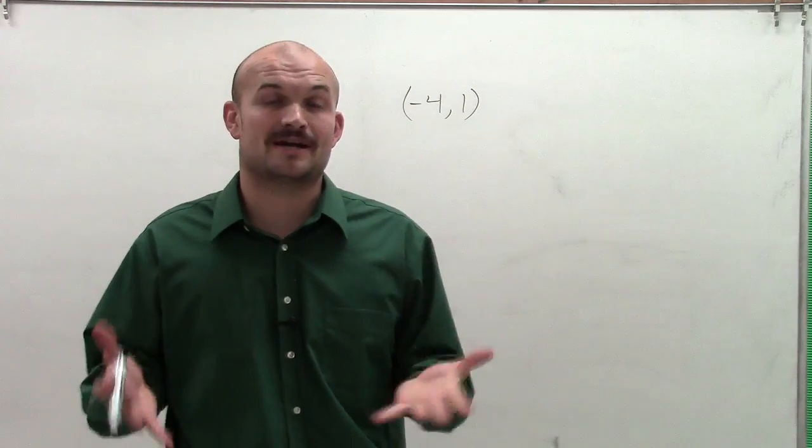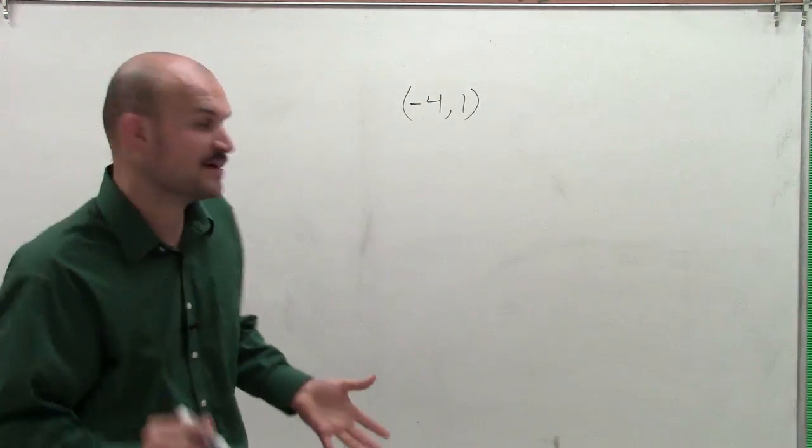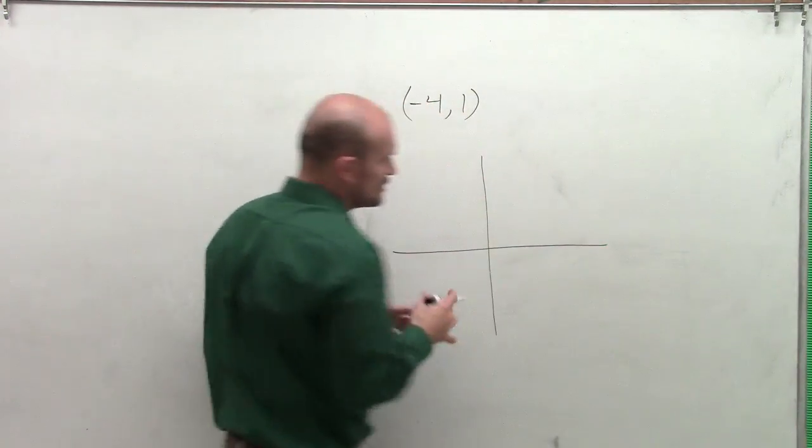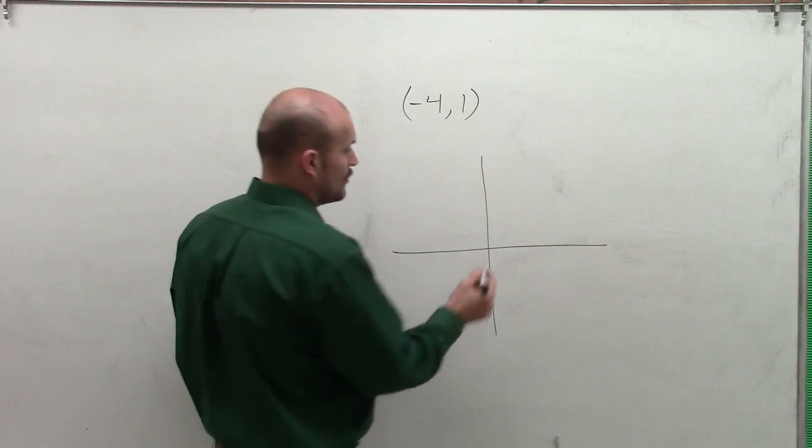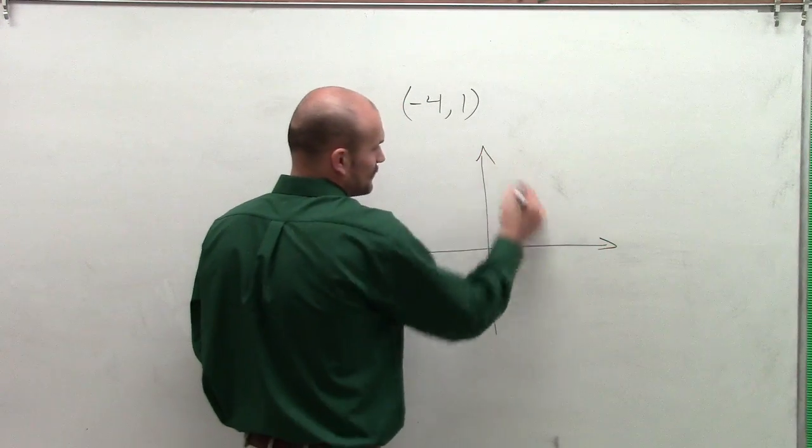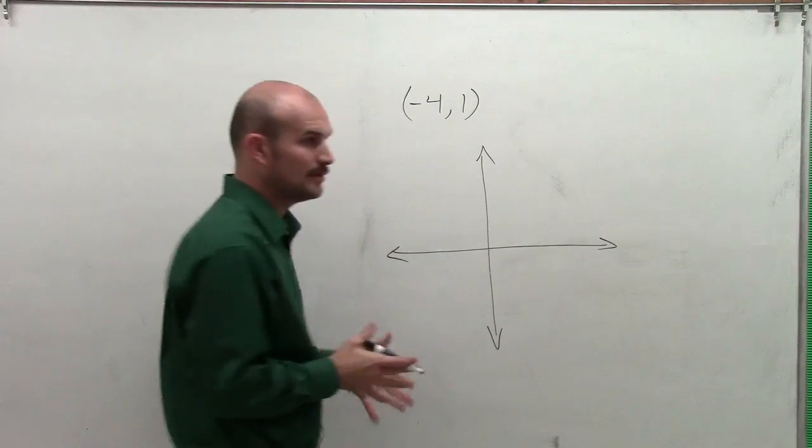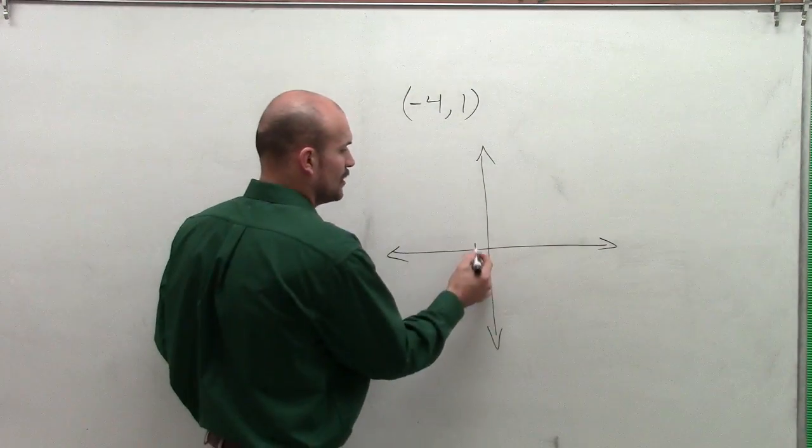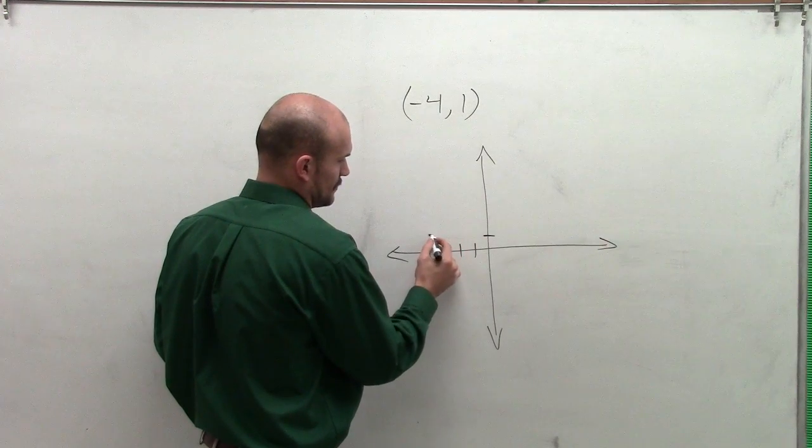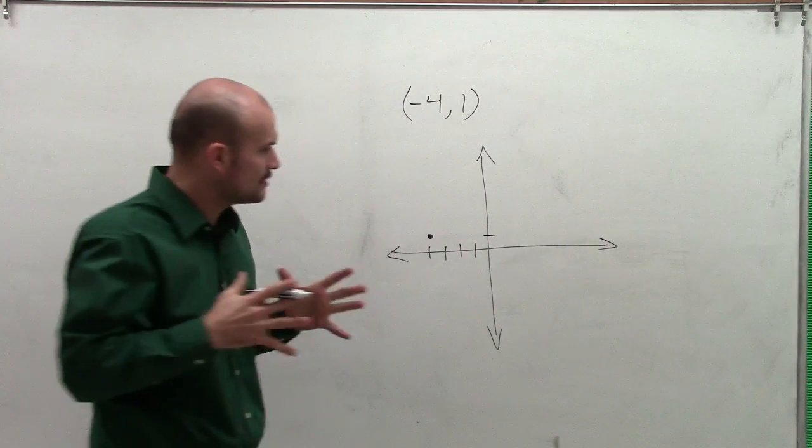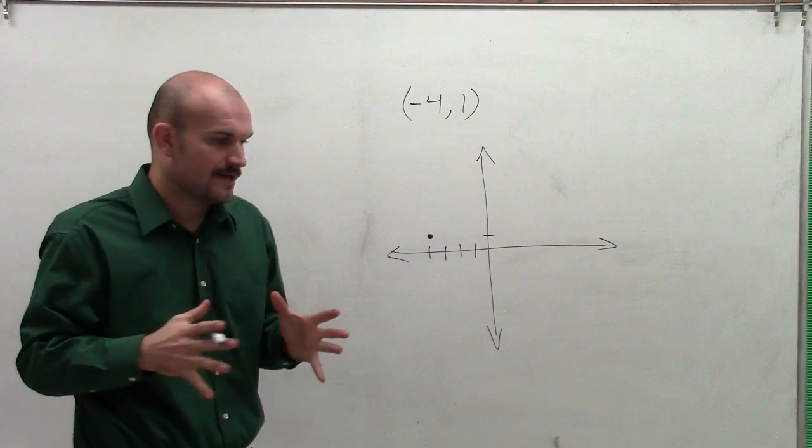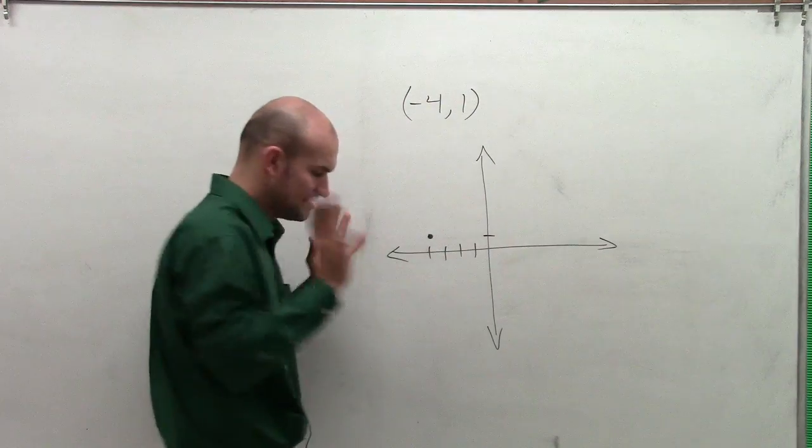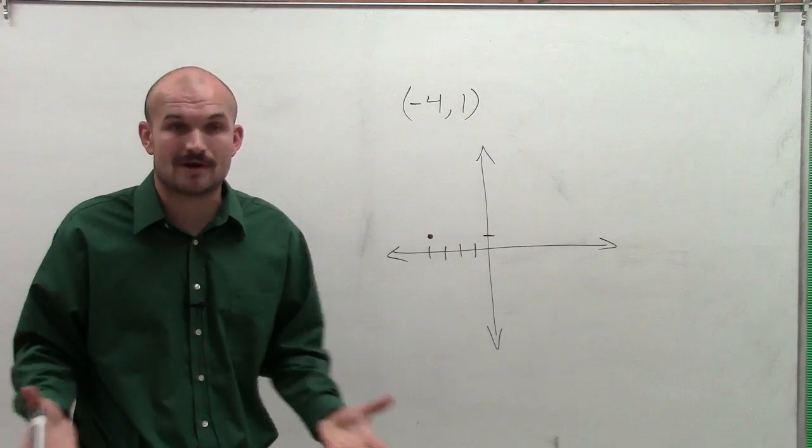So the next thing we can do to find our trigonometric functions is to create a triangle. There's a special way I want you to remember to create triangles when given a point. We're always going to use our standard angle, where our initial side is going to be on our x-axis, and then we're going to have a terminal side. First I'm going to plot the point (-4, 1). We need to create a triangle.